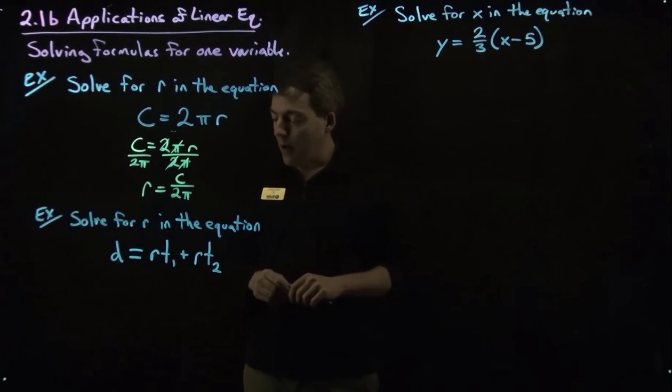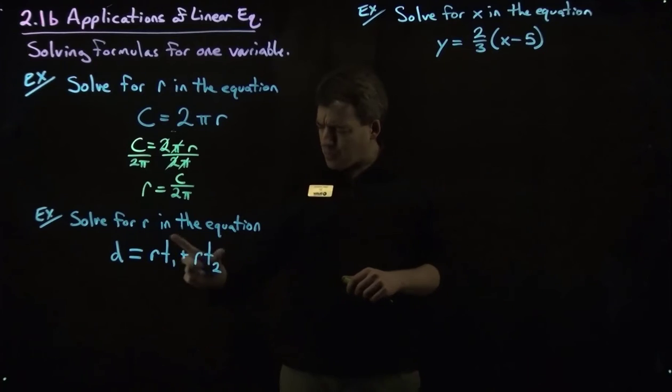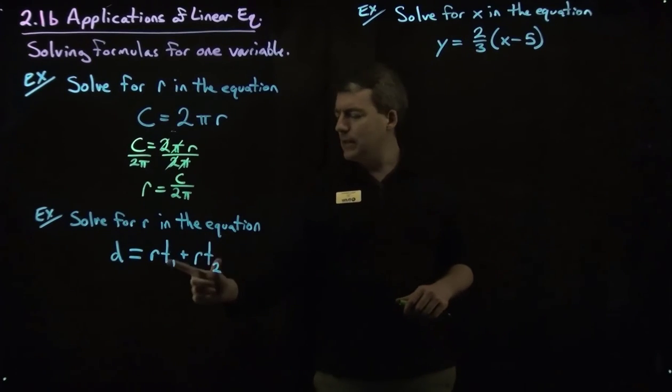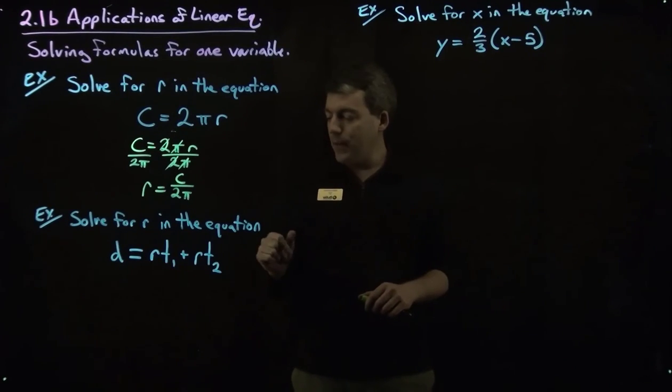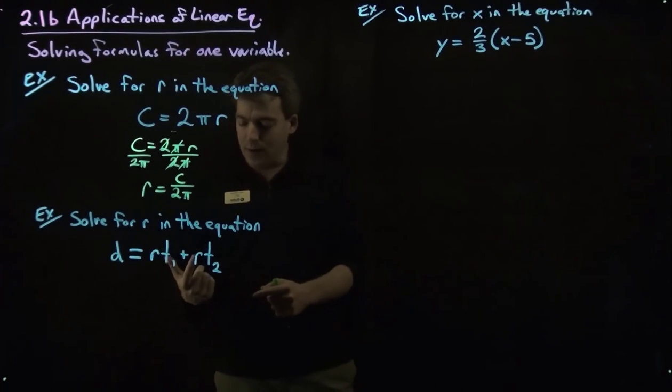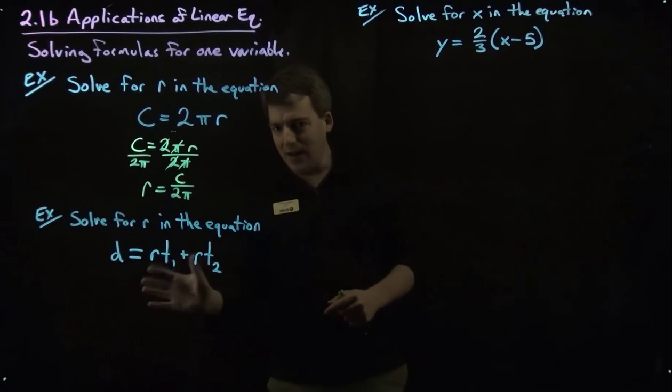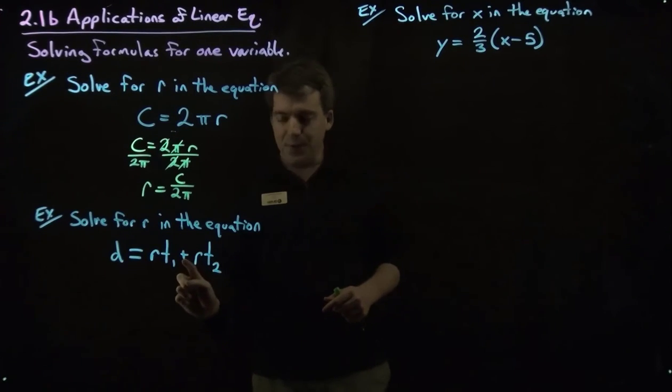And so we're asked to solve for r and you can see there's a kind of a problem. We have r appearing twice in our equation here and the question then is well how do we get that by itself? Now we can see that it's being multiplied by the t1, this r is multiplied by t2. However we cannot divide by t1 and t2 and the reason is we have this plus here.